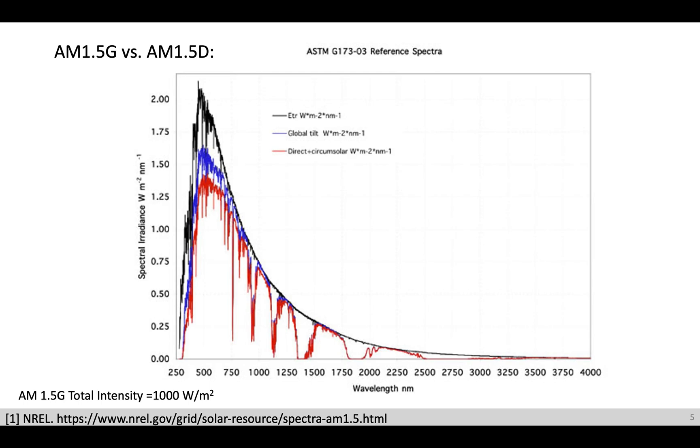The AM1.5G spectra is used for most PV standardized testing, PV as photovoltaic, because most solar cells make use of both scattered and direct sunlight. If we integrate the entire AM1.5G spectra, the total intensity is about 1000 watts per meter squared. The AM1.5D spectra in red is used for testing systems with a light concentrator that does not absorb scattered light.